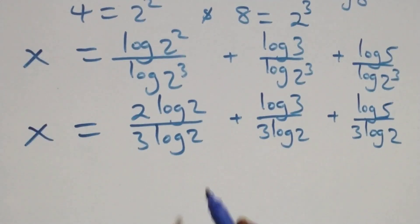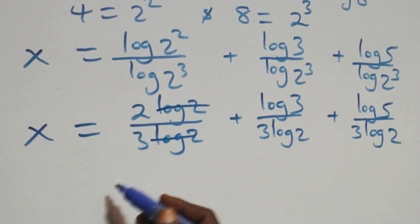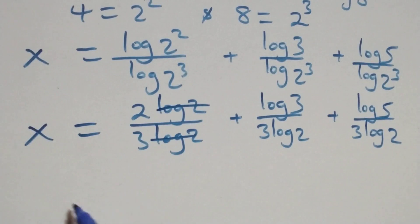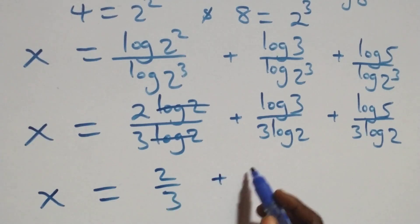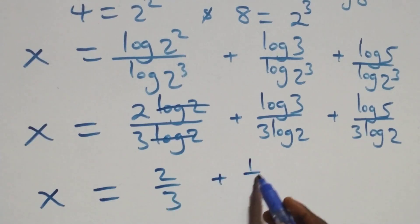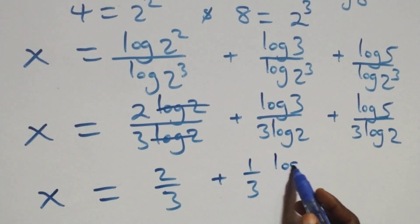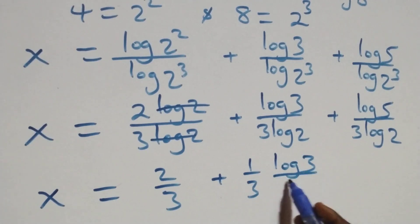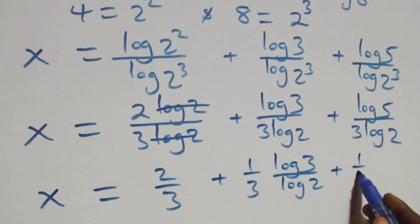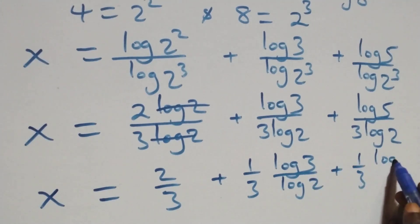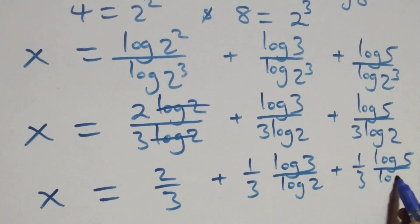From here, applying the power rule of logarithms, log 2 cancels, leaving 2 over 3. So x equals to 2 over 3 plus 1 over 3 times log 3 over log 2 plus 1 over 3 times log 5 over log 2.